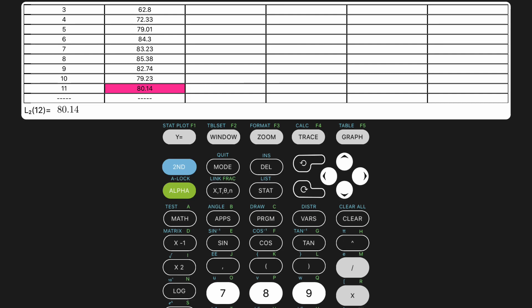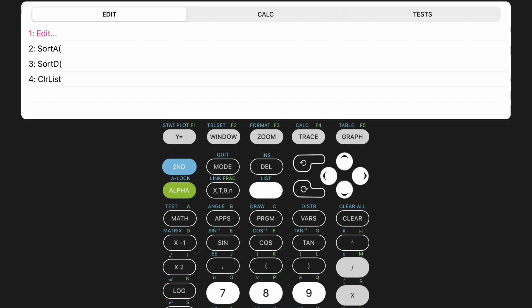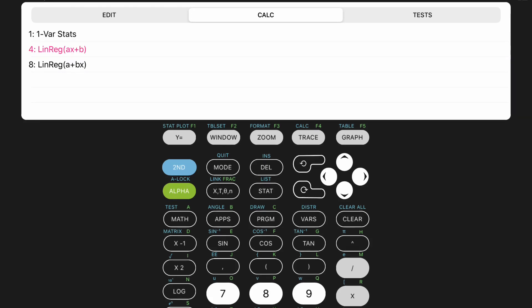Once you have entered the data into your calculator, it's time to let the calculator do its magic. We will now run the linear regression on this data by going back to Stat, but this time we will click the right arrow to go to the Calc section. We are looking to run a linear regression in Y equals AX plus B form, so I will select option 4, LIN REG AX plus B.